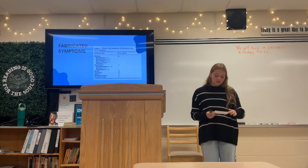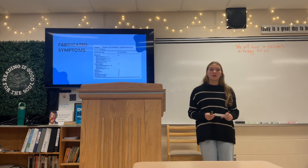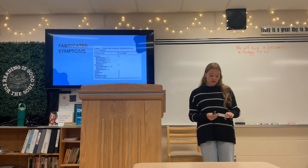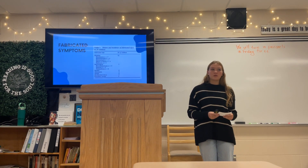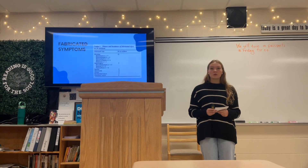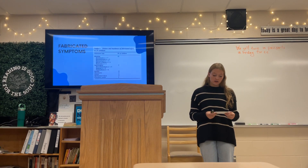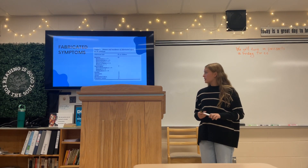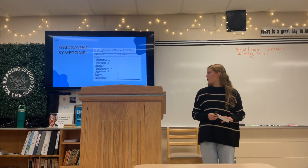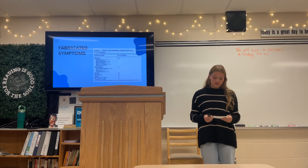In the article 'Munchausen Syndrome by Proxy' by Roy Meadow, it covers information about 19 kids all under the age of 7 from 17 different families. There was a total of 40 different fabricated signs in these children: bleeding being the most common, then neurological signs such as comas, seizures, and unsteadiness in 7 cases, rashes in 6, glycosuria in 5, fevers in 4, biochemical abnormalities also in 4, and vomiting in 2.